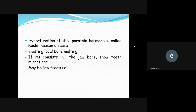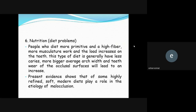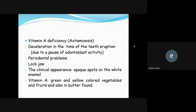Hyperfunction of the parathyroid hormone is called Recklinghausen's disease, causing local bone melting. If this occurs in the jaw bone, it can cause teeth migration and jaw fracture. Regarding nutrition and diet: people with a more primitive, high-fiber diet have more muscular work and generally healthier teeth with fewer caries. In contrast, those eating a modern soft diet tend to have more malocclusion.